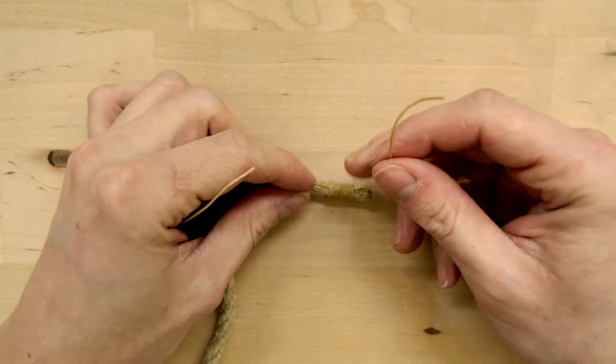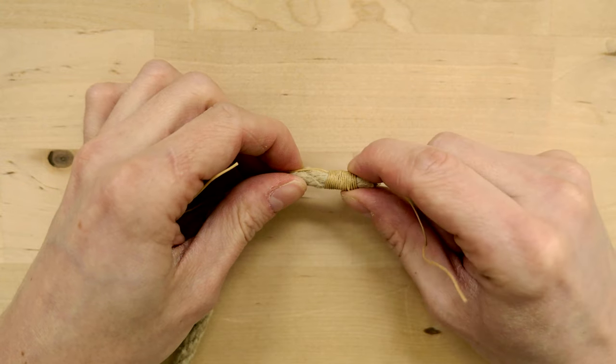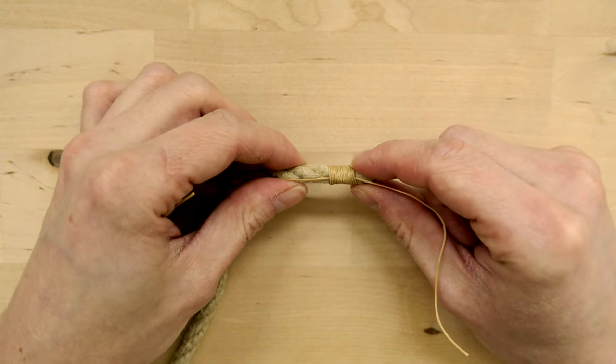If you want you could also tie a square knot in order to further secure your whipping but I do not think this is needed in this case.